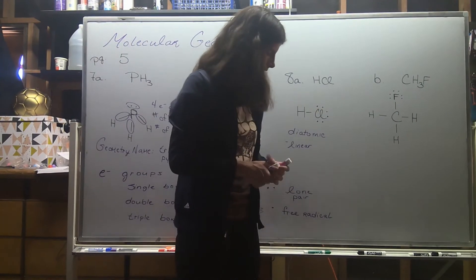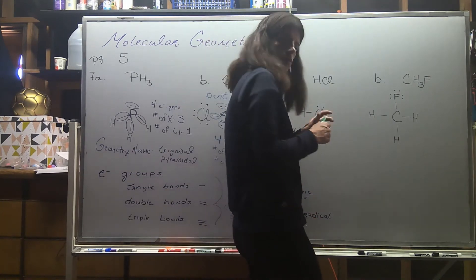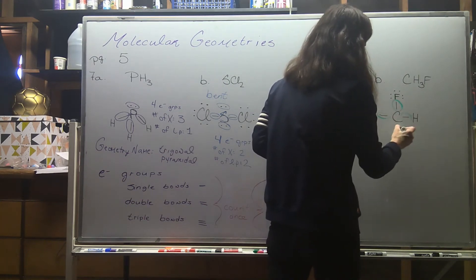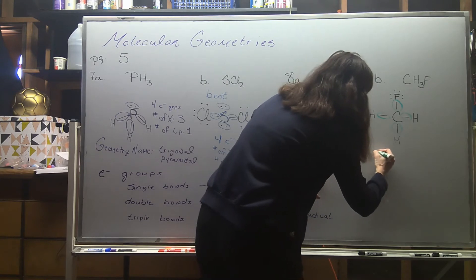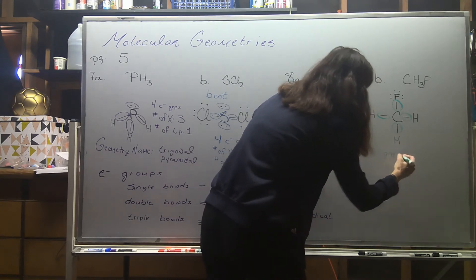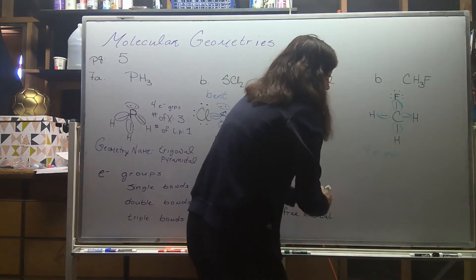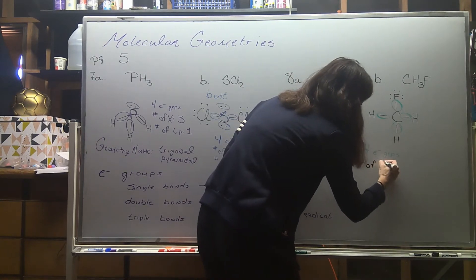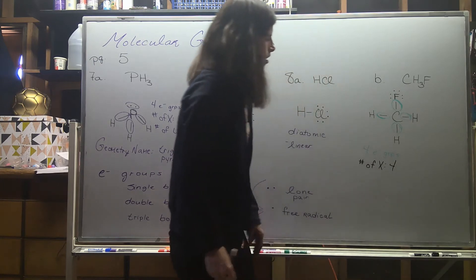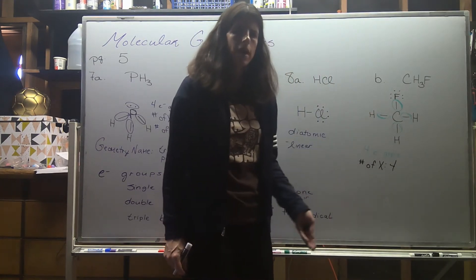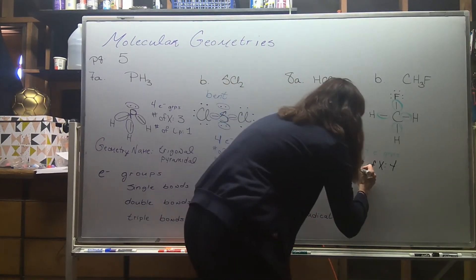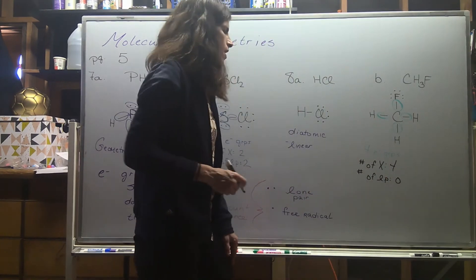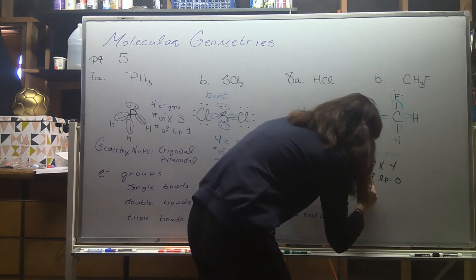Over here, carbon is our central atom. Identifying the number of electron groups attached to carbon: one, two, three, four — so four electron groups. Of those four electron groups, I have four X's, or four bonds. There were no lone pairs attached to that carbon, so for number of lone pairs we have zero. A 4-4-0 combination is tetrahedral.